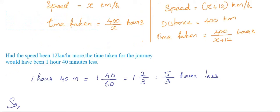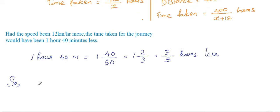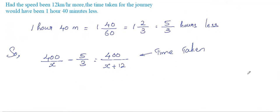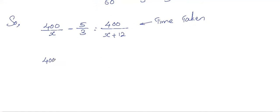Write down the equation. The original time, 400 divided by X, minus 5/3 equals 400 divided by X plus 12, which is the new time taken.